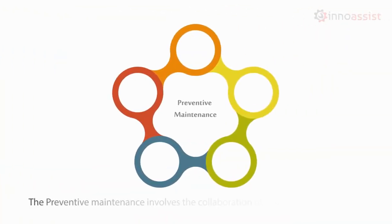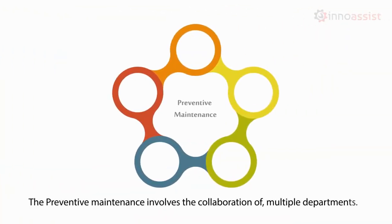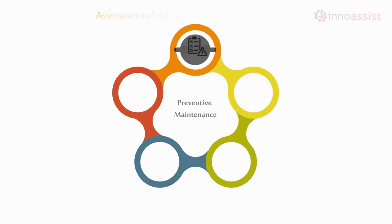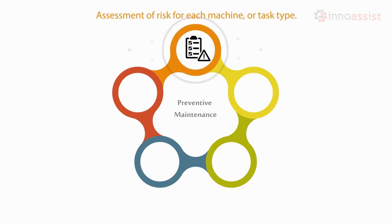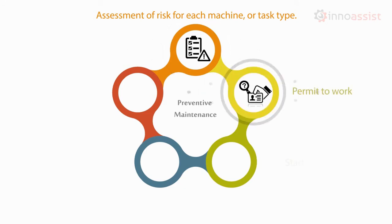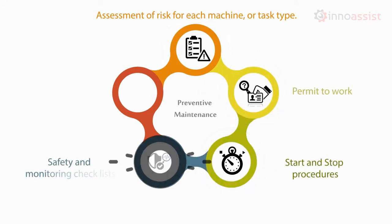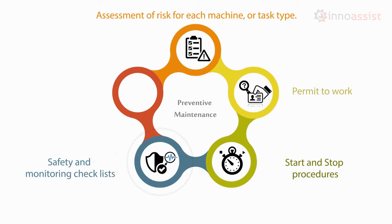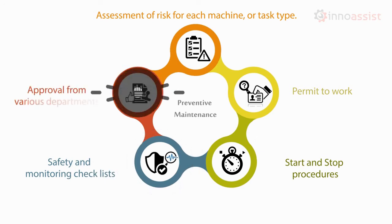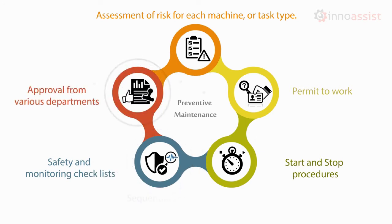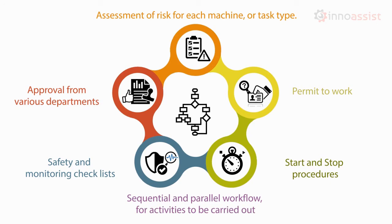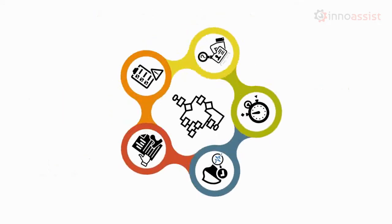Preventive maintenance involves the collaboration of multiple departments, assessment of risk for each machine task type, permit to work, start and stop procedures, safety and monitoring checklists, approval from various departments, and sequential and parallel workflow for activities to be carried out.